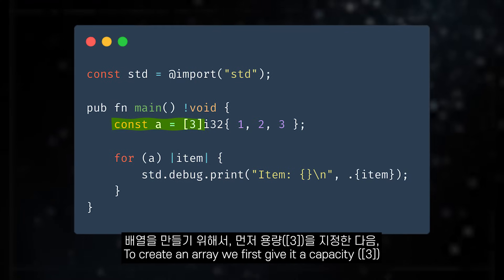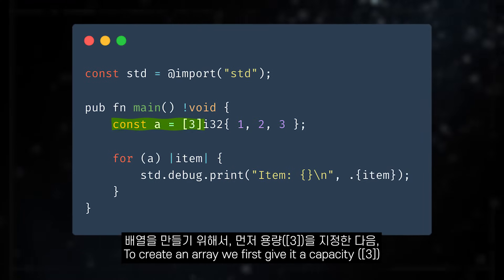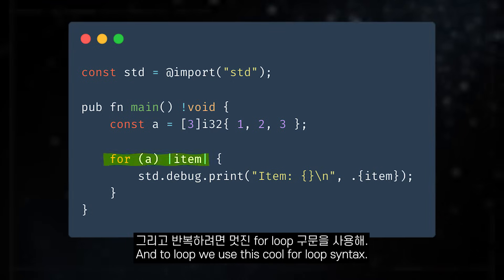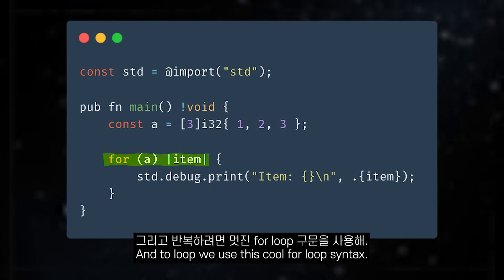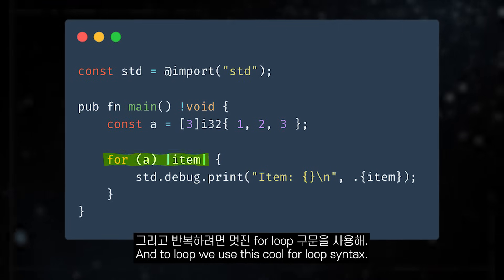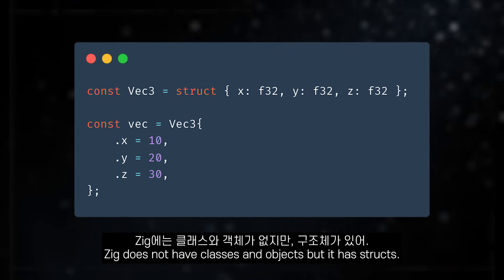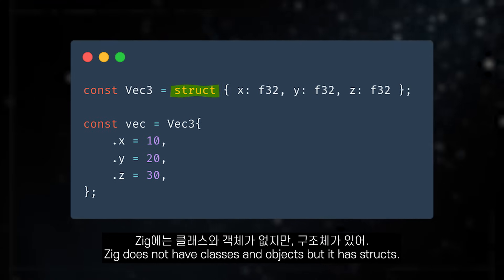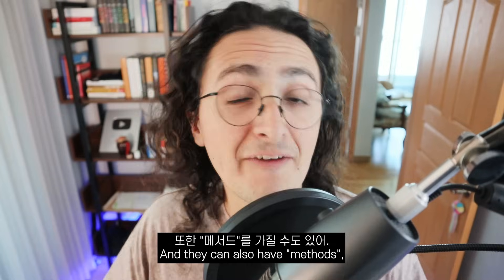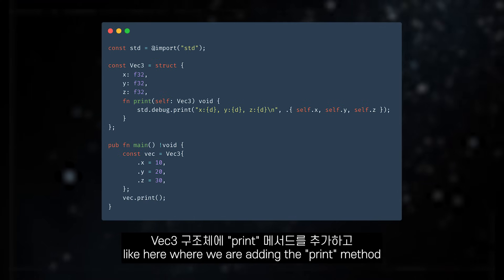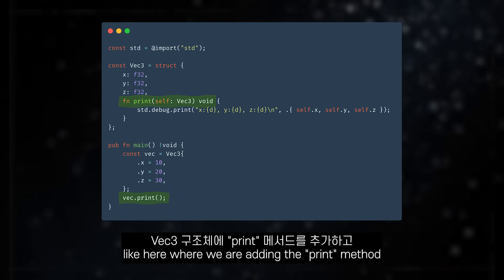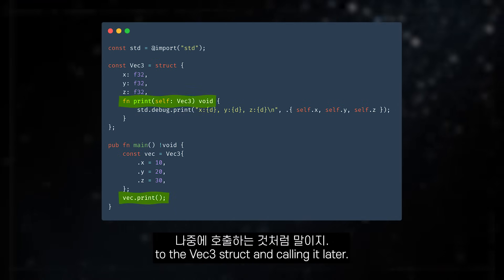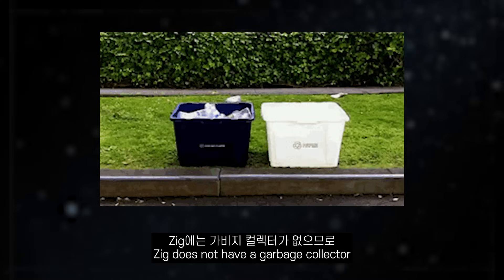To create an array, we first give it a capacity and then the type of its elements. And to loop, we use this cool for loop syntax. Zeek does not have classes and objects, but it has structs, and they can also have methods — like here where we are adding the print method to the VEC3 struct and calling it later.